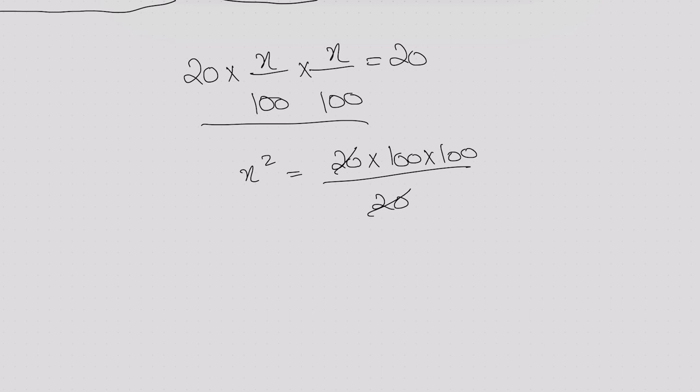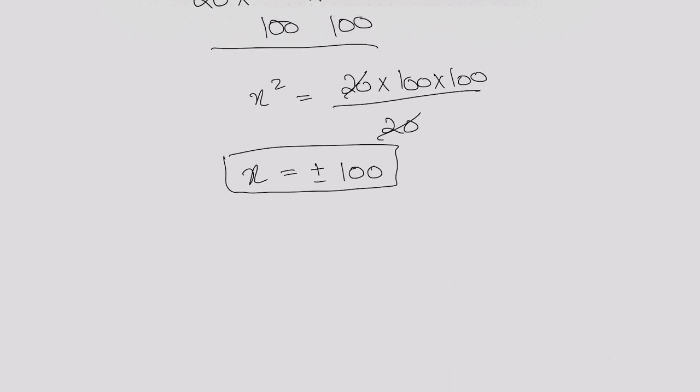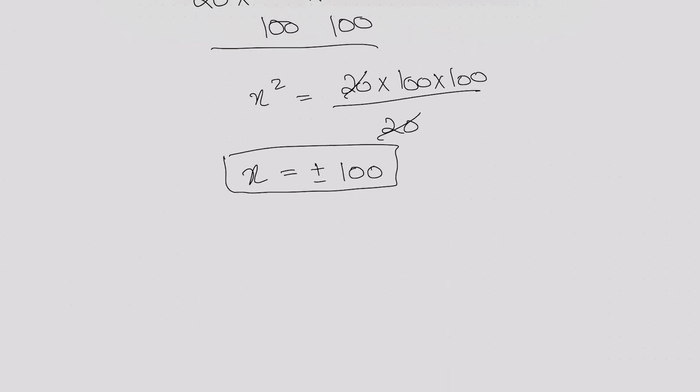I can get the value for x as plus minus 100. Over here, a lot of people make the mistake that when they take the square root of x, they just consider one value while taking that square root. They don't consider the negative value, but there is also a negative value.